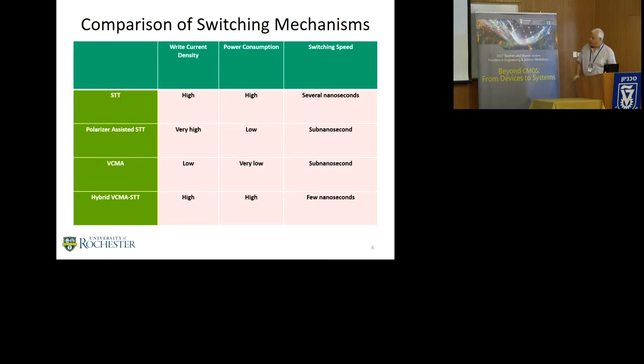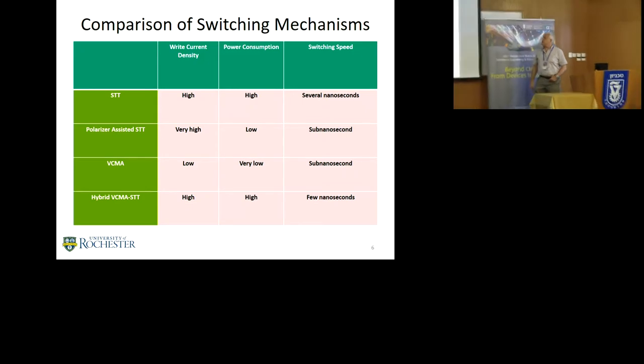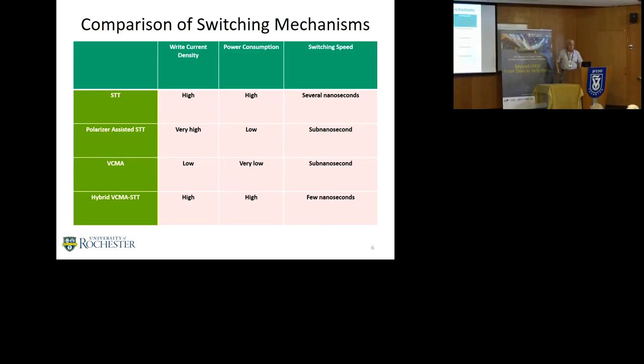Here's some of the various mechanisms: STT, we can improve the STT characteristics by adding a polarizer, VCMA, and a hybrid model for it. You can have different impedance characteristics, different power characteristics, different current densities, and very poorly different switching speeds. I should point out this is a typo. This should be low, not high.